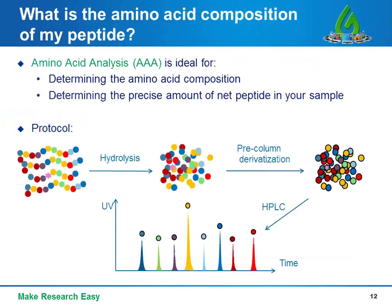Since purity is defined as a ratio between the target peptide and other peak areas, the next question is how to measure all these peptide species — or in other words, measure the net peptide content. The AcuPepQC service provides two test options. The first method is amino acid analysis, abbreviated as AAA, which can determine not only the precise amount of net peptide but also the amino acid composition.